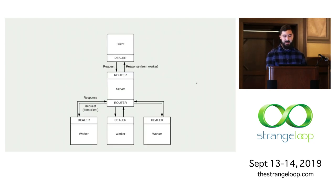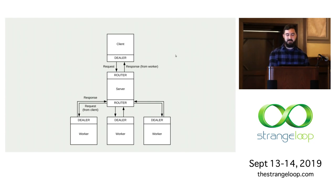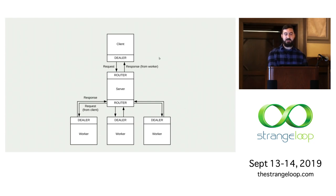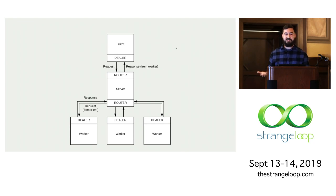Let's look at the ZeroMQ architecture diagram. Instead of request and response sockets, we use a combination called dealer and router. Your dealers are the client and the worker processes, and the server functions as a go-between or broker. A message comes in from the client, the server finds an available worker and routes the request to it, the worker sends a response back to the server, and the server routes that back to the client. I was surprised how easy it was to build something like this with ZeroMQ.